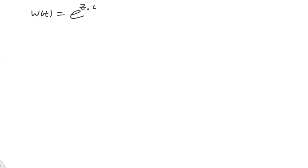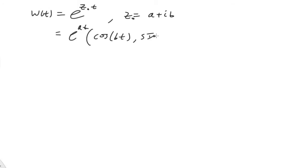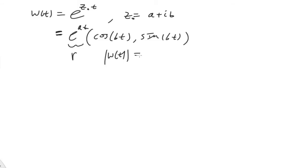Now let's talk about W of t equal to e to the z-naught times t, where z-naught is just a fixed value a plus ib. We can write this function as e^(at) times the vector (cosine bt, sine bt). This is a little more complicated. Now clearly e^(at) is what you could call the modulus of the complex number, so if I take the modulus of this function it would simply be e^(at).